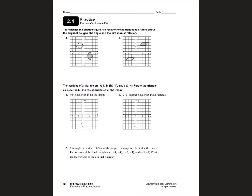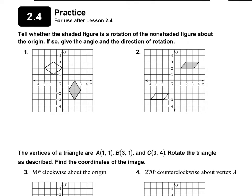Now turn in your RPJs to page 36. For numbers one and two, we are told to tell whether the shaded figure is a rotation of the non-shaded figure about the origin, and if so, give the angle and direction of the rotation. Let's take a look at number one. It looks like it might be a rotation, but it's actually not a rotation about the origin here. It could be a rotation about the point (2, 2), but that wasn't the question. The question was asking: is it a rotation about the origin? So we're going to say no on this one.